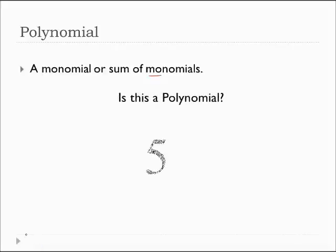Let's find out. Are these polynomials? Five? The answer is yes, because five is a monomial. If you'll remember, a monomial is a constant or a variable or a product of constants and variables with whole number exponents. Five is a constant, therefore it's a monomial, and a monomial is a polynomial. So yes, this is a polynomial.